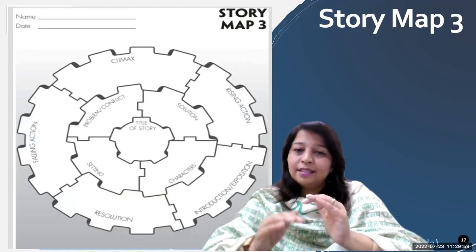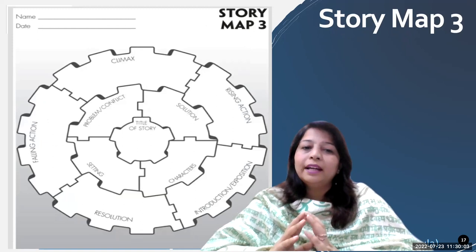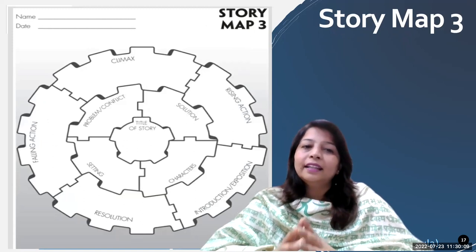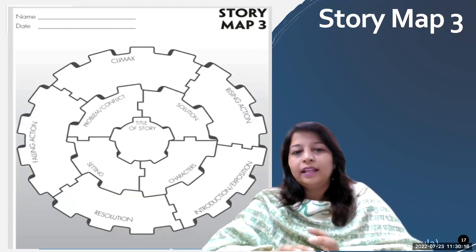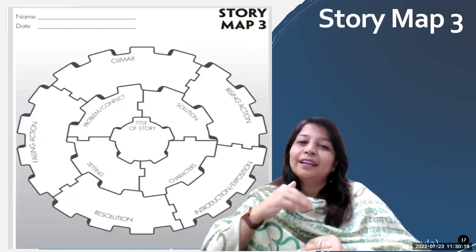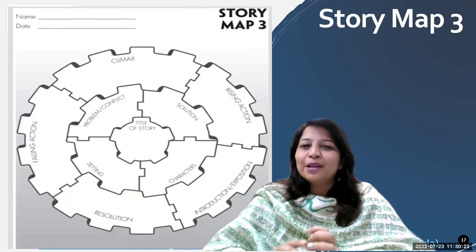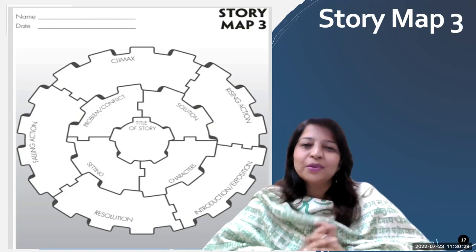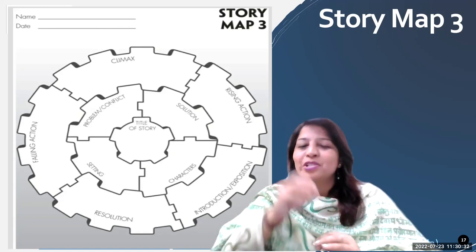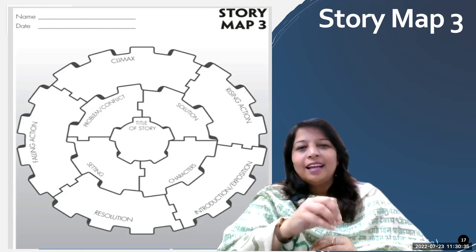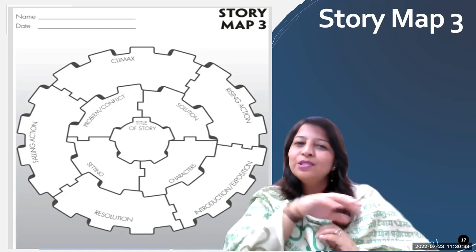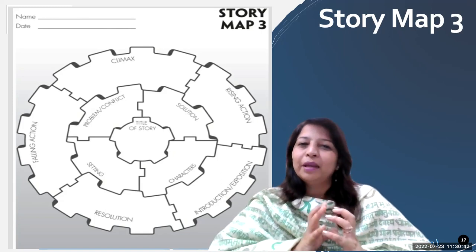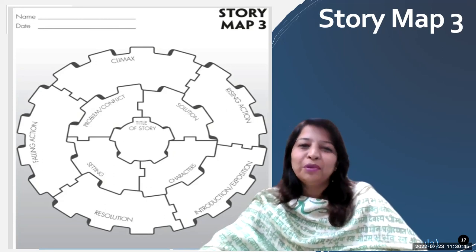Next is story map three — a higher, more complex version. They have to write the title of the story, problem or conflict, solution, character, setting, and then climax, rising action, introduction, resolution, and falling action. Please make sure you give creative homework and keep on changing the type of graphic organizer you are sharing with your students. You need not frame different kinds of questions — just share a graphic organizer. You will really come across different kinds of innovative answers from your students.